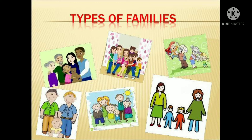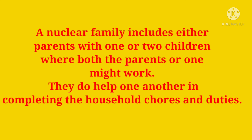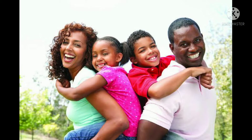Now let us see the types of family one by one. First, the nuclear family — a nuclear family consists of parents with one or two children, where both parents or one might work. They help one another in completing the household chores and duties. That is called a nuclear family.